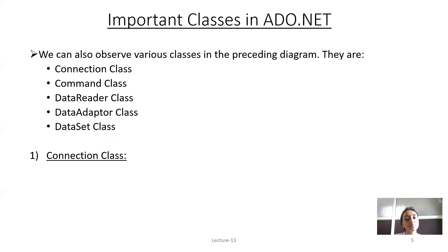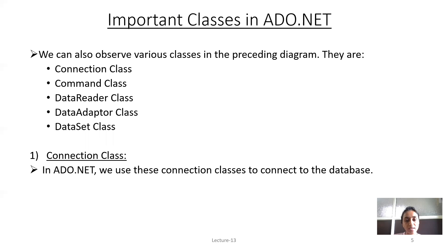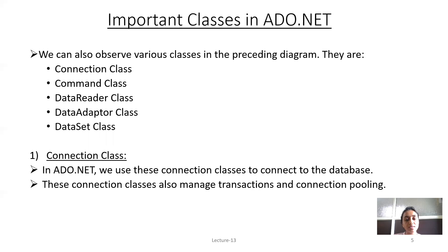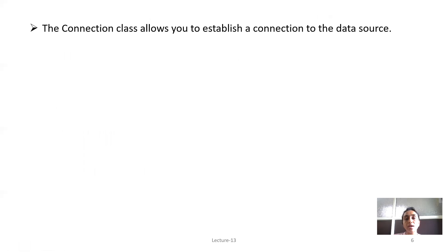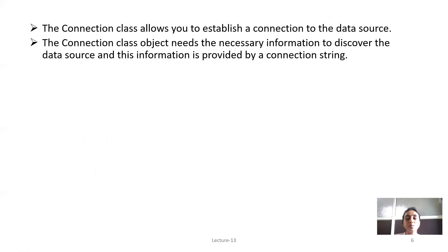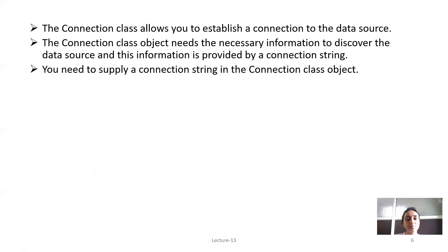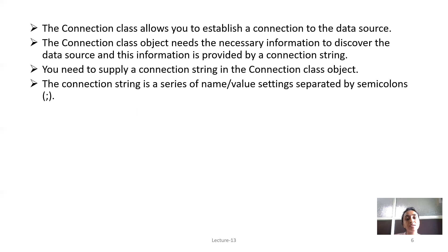First, we will see the connection class. In ADO.NET, we use connection classes to connect to a database. These connection classes also manage transactions and connection pooling. You need to establish a connection class object for inserting, updating, deleting, and retrieving data from a database. The connection class allows you to establish a connection to the data source. The connection class object needs the necessary information to discover the data source, and this information is provided by the connection string.